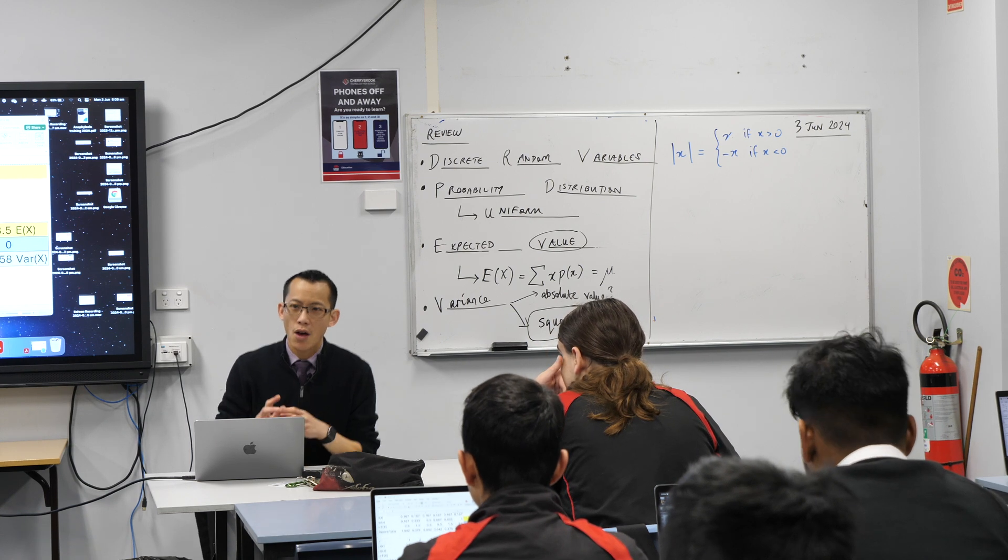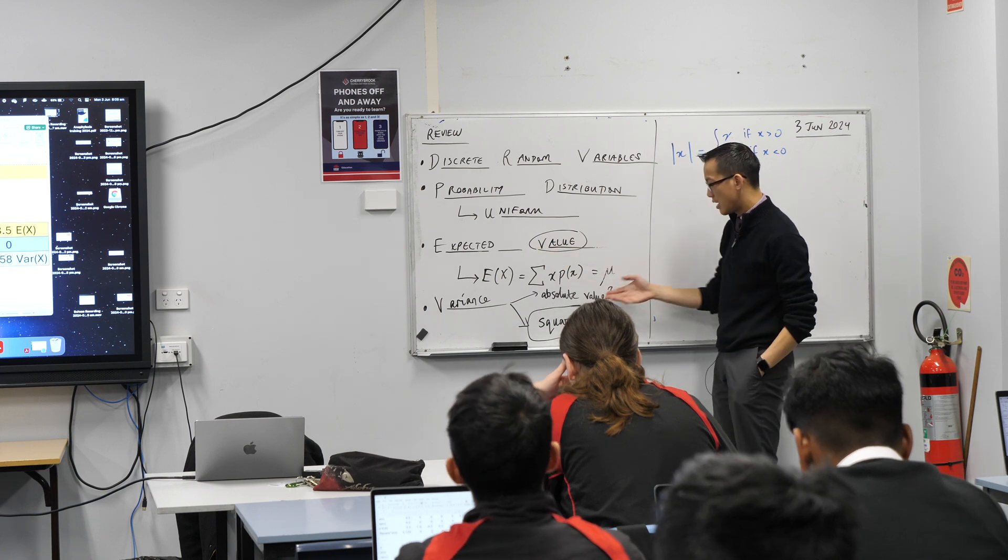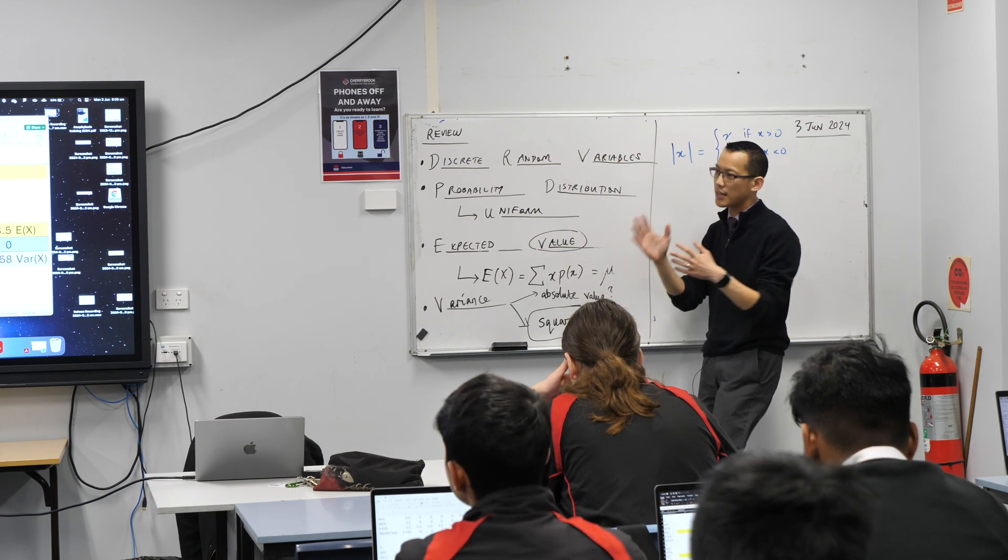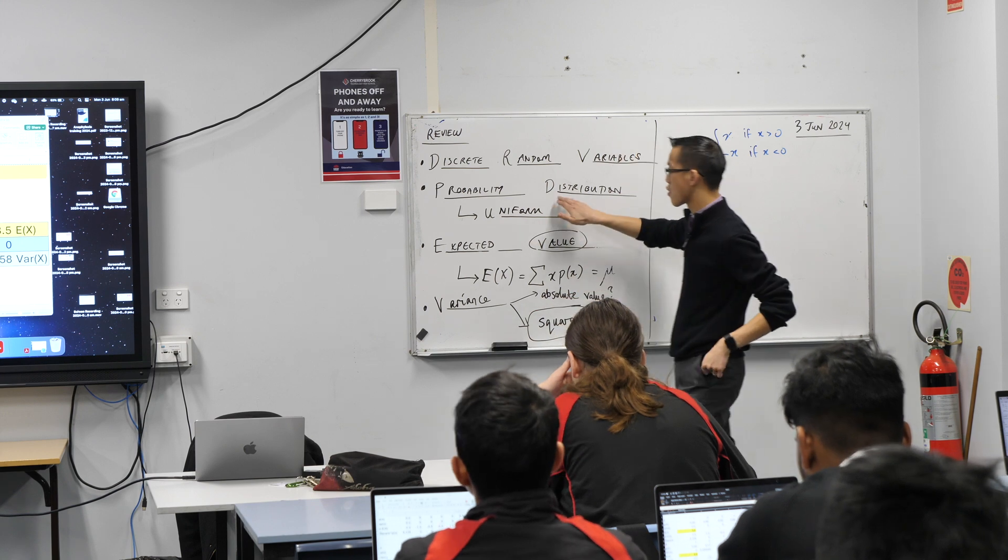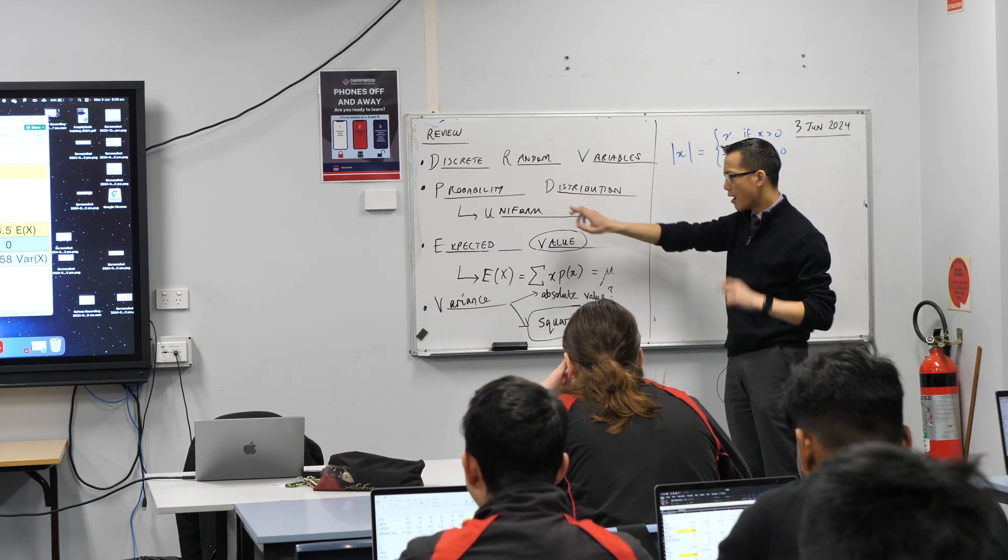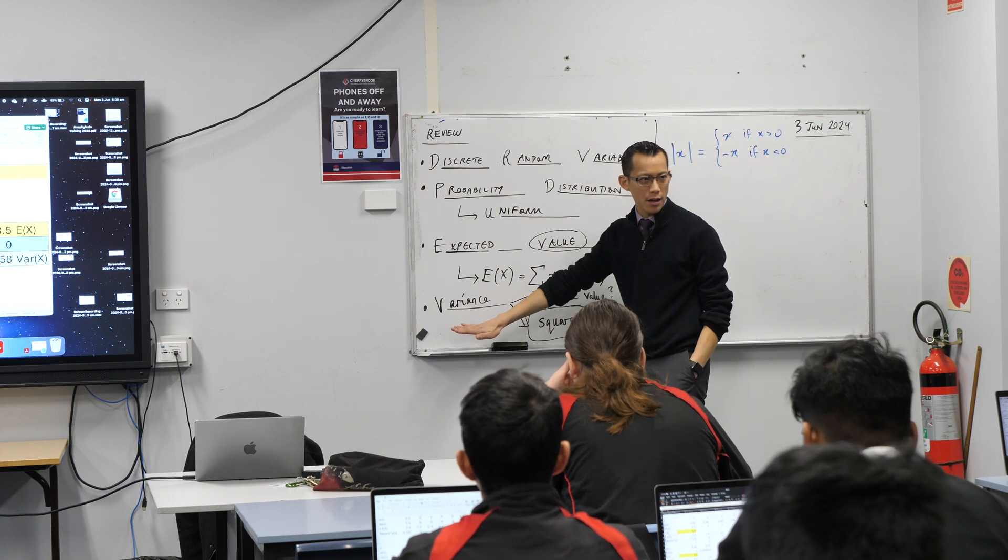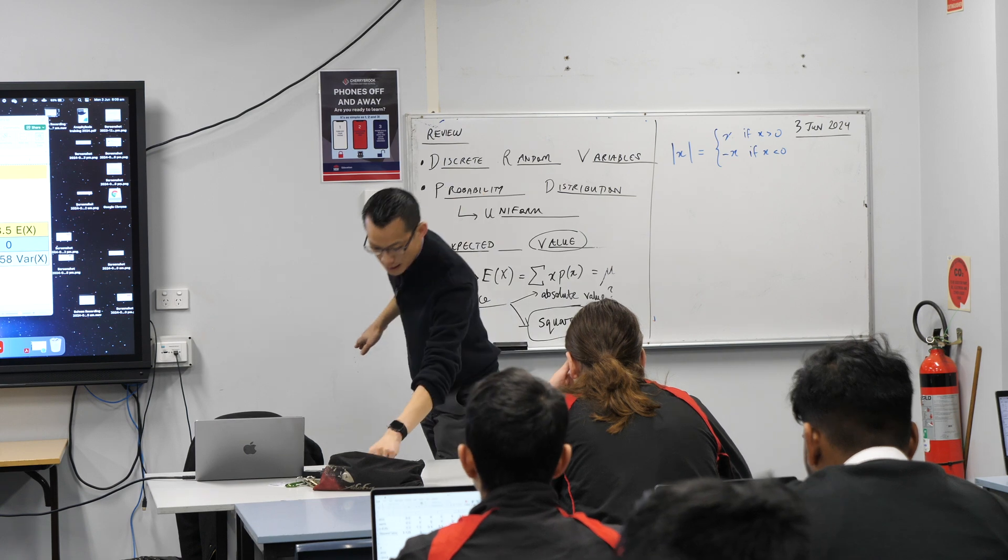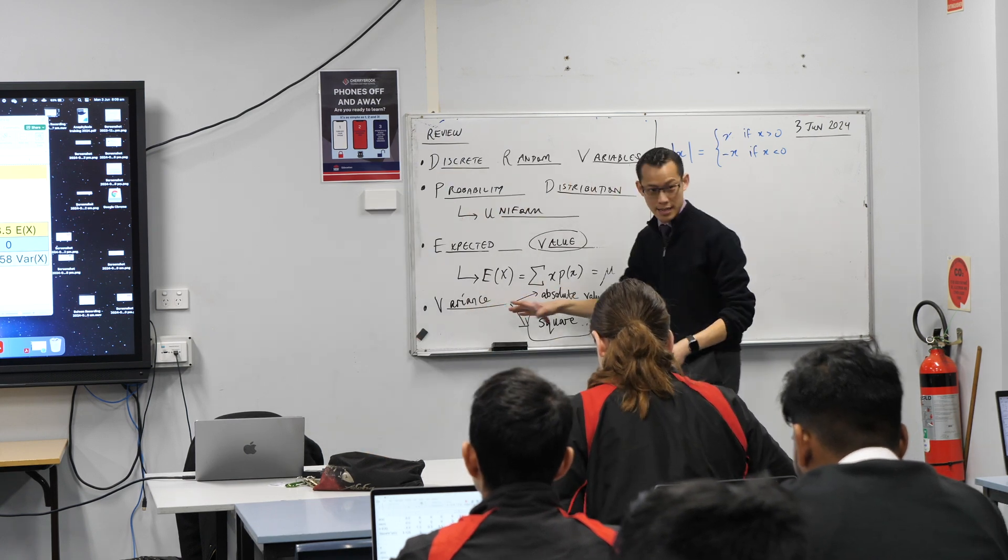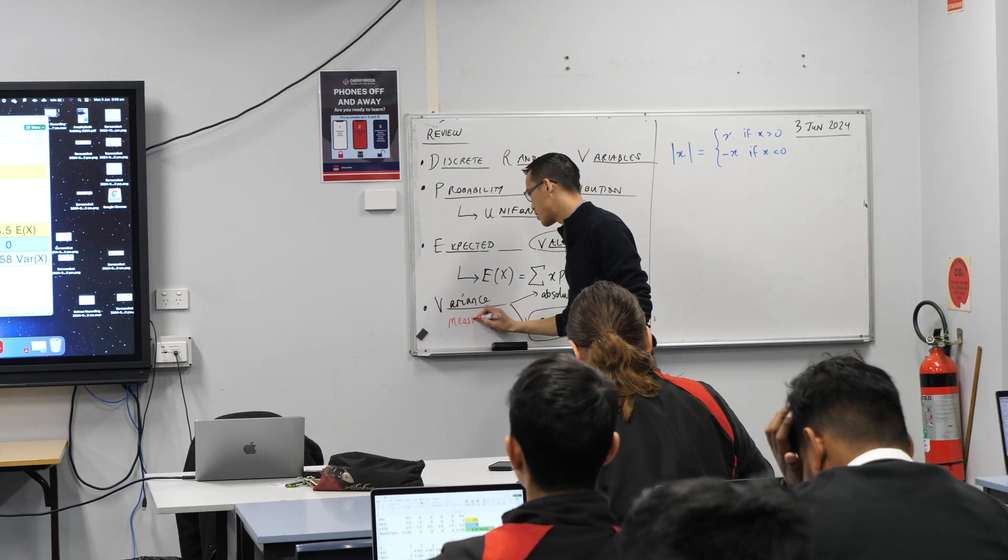So let's just review. What we wanted to do is say, expected value, the measure of center, it's useful, but it doesn't tell the whole story. You can have probability distributions that are wildly different, like our three dice here, and they all have the same expected value, so you need some other thing. If you haven't written this down yet, you should. We're going to define this thing as variance, it's a measure of spread, not a measure of center.